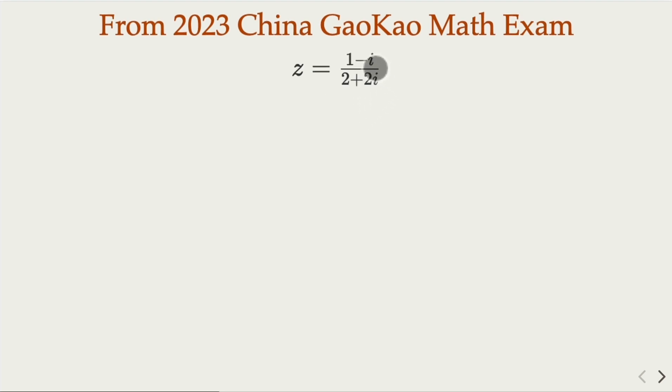So you multiply both the top and the bottom by 2 minus 2i. And what you're going to get in the bottom is going to be 2 squared plus 2 squared. So here is 4 plus 4.